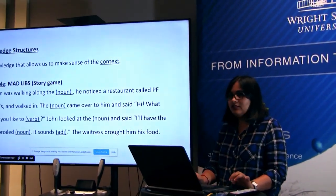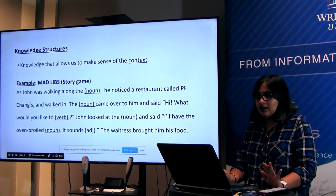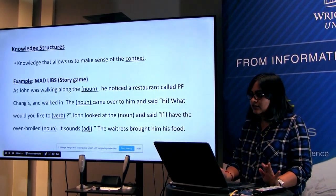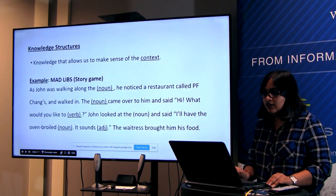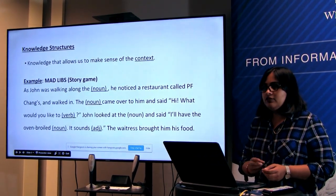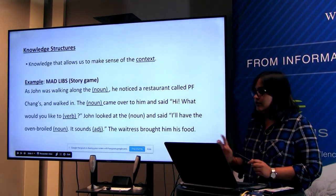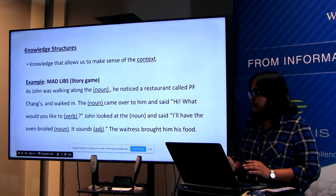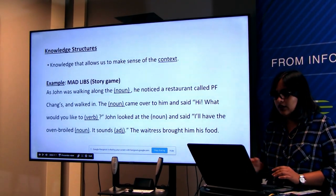Knowledge structures are what allow us to make sense of the context or the situation. Here is an example given in the book by Schank — Mad Libs. It's a game about stories.